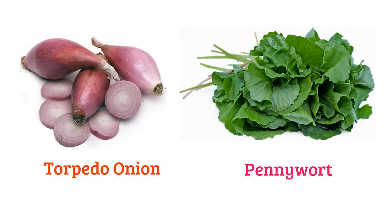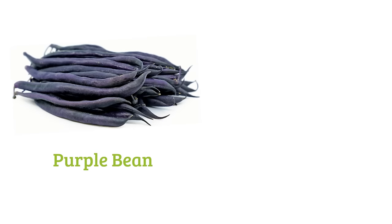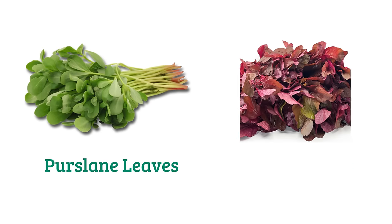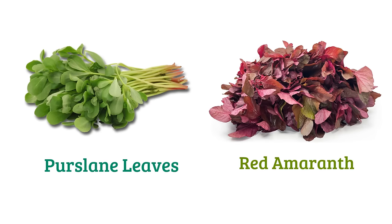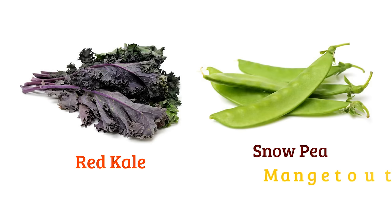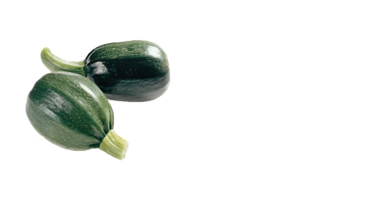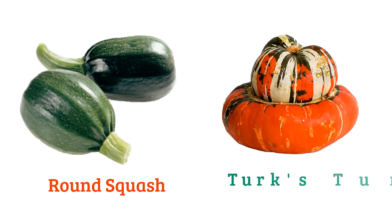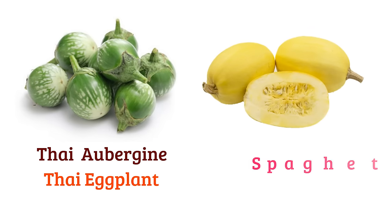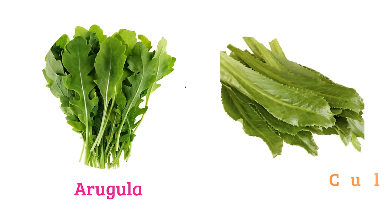Pennywort. Purple bean, purple potato or blue congo. Red amaranth. Red kale, snow pea. Round squash, Turk's turban squash, Thai aubergine or Thai eggplant. Spaghetti squash. Arugula. Culantro.